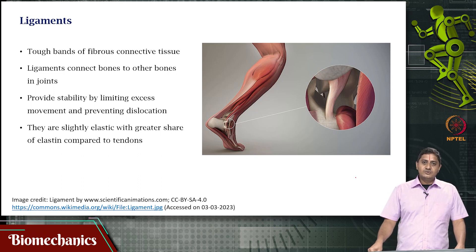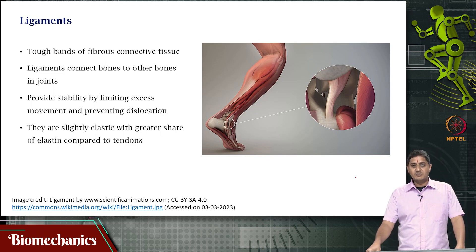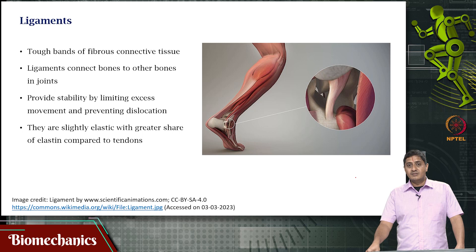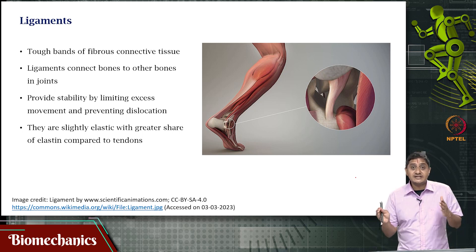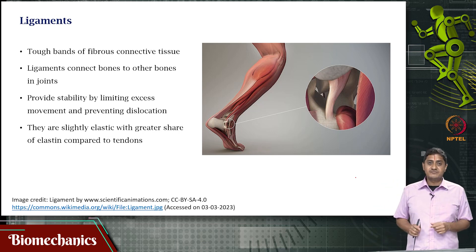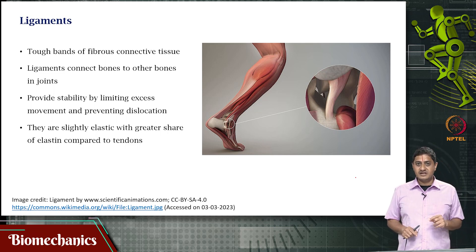Then we move on to ligaments. These are tough, fibrous bands of connective tissue that connect and hold bones together. When we discussed the knee joint, we discussed the crucial role performed by the cruciate ligaments and the collateral ligaments. Their important role is to maintain joint stability and minimize the possibility of dislocation. If dislocation happens, it can be an extraordinarily painful process to recover from.